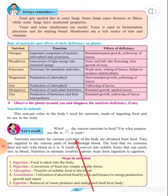Nutrients necessary for various activities of the body are obtained from the food. They are supplied to the various parts of the body through the blood. The food that we consume does not mix with blood as it is. It needs to convert into soluble forms that can easily mix in the blood.